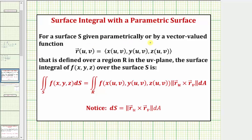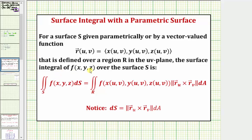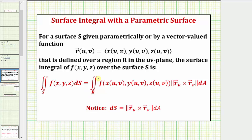For a surface S given parametrically, or by a vector valued function r of u comma v, that is defined over region R in the uv plane, the surface integral of f of x comma y comma z over the surface S is equal to the double integral over the region R of f of u comma v, times the magnitude of the partial derivative of r with respect to u crossed with the partial derivative of r with respect to v, times differential A.